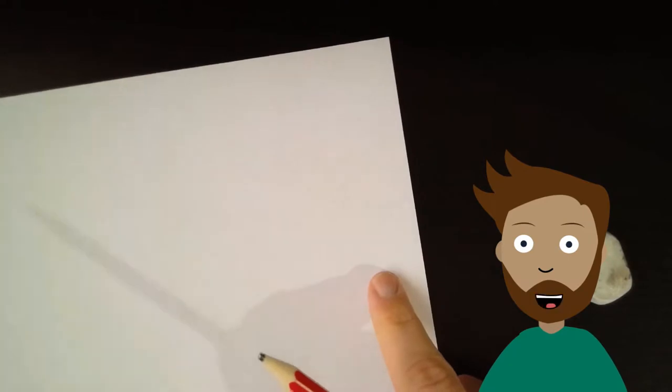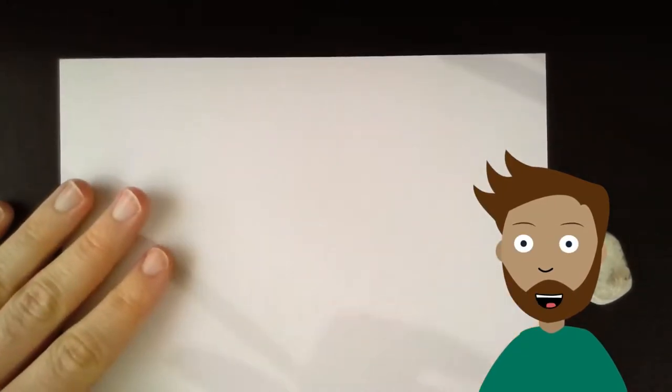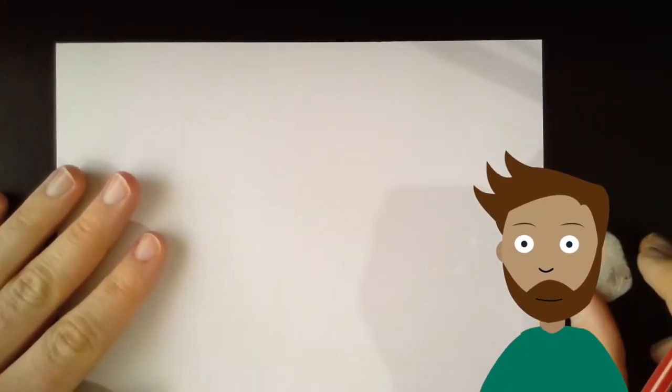So I've laid out the items I need. I've got a pencil, an eraser and some texters to do the bubble writing and colour in with. I'll get started.